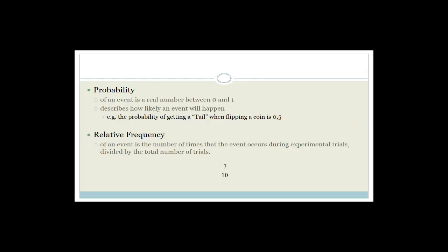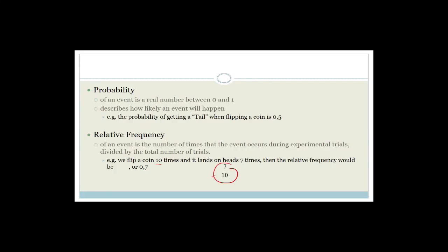Now we need to talk about relative frequency. The relative frequency of an event is the number of times that the event occurs during experimental trials divided by the total number of trials. For example, if we flip a coin 10 times and it lands on heads seven times, then the relative frequency would be 7 out of 10, or 0.7.